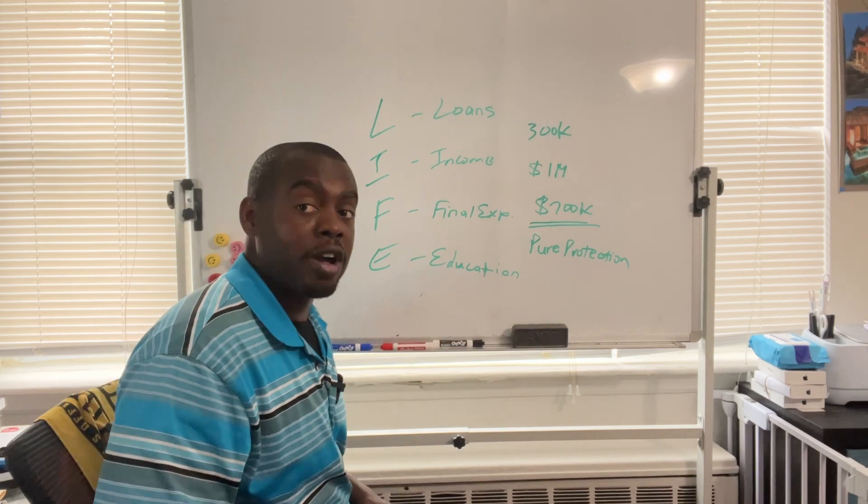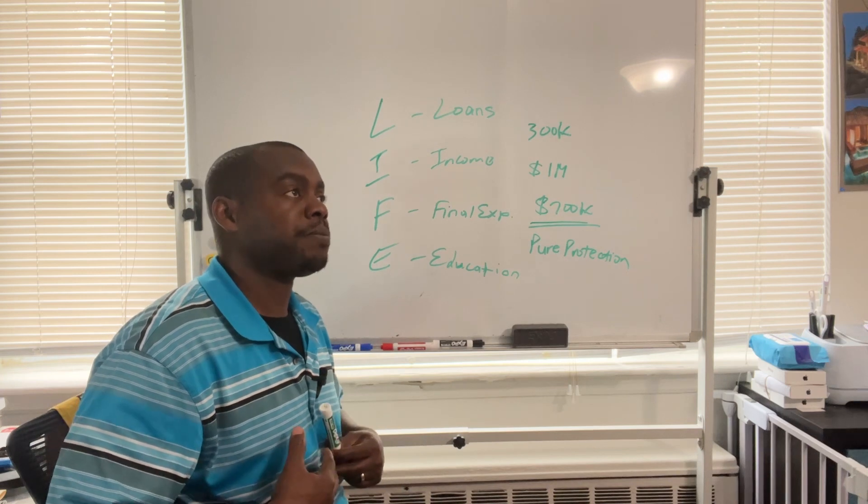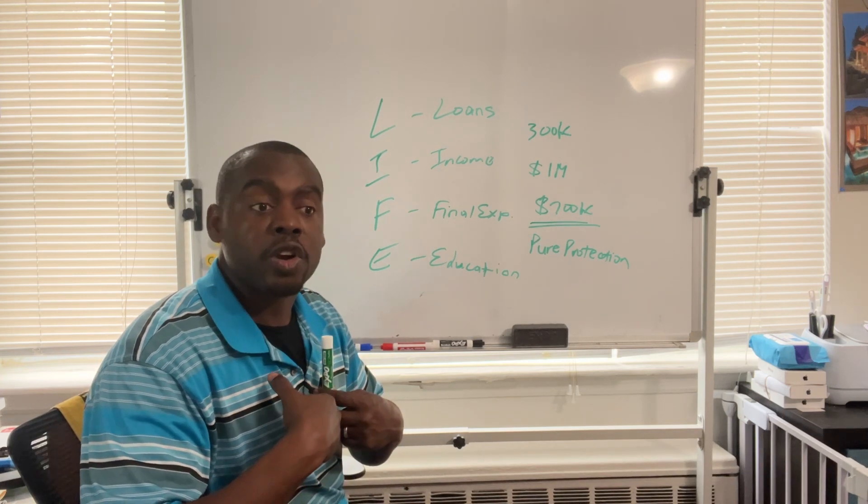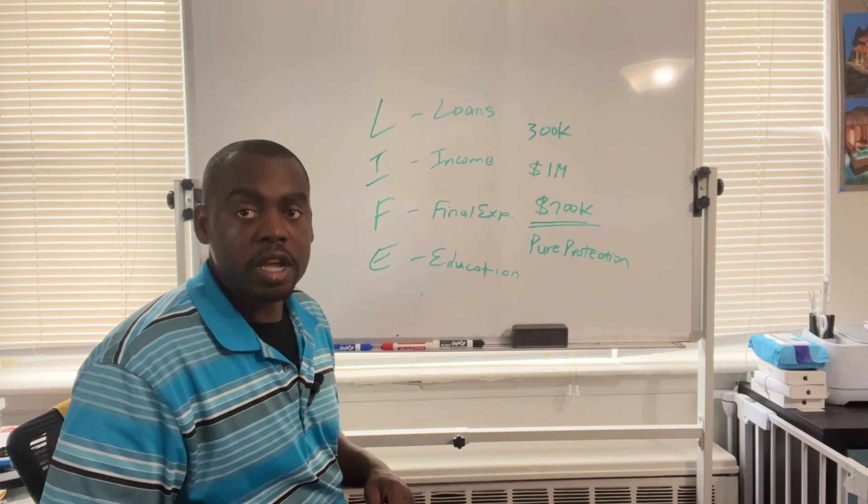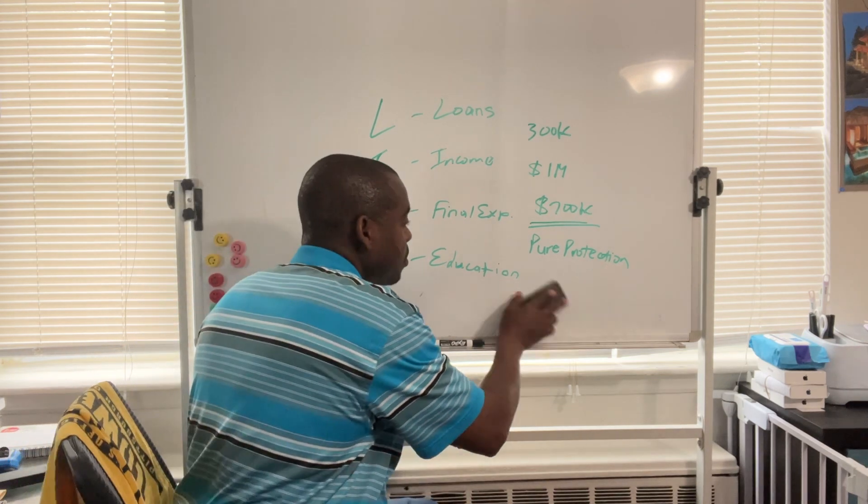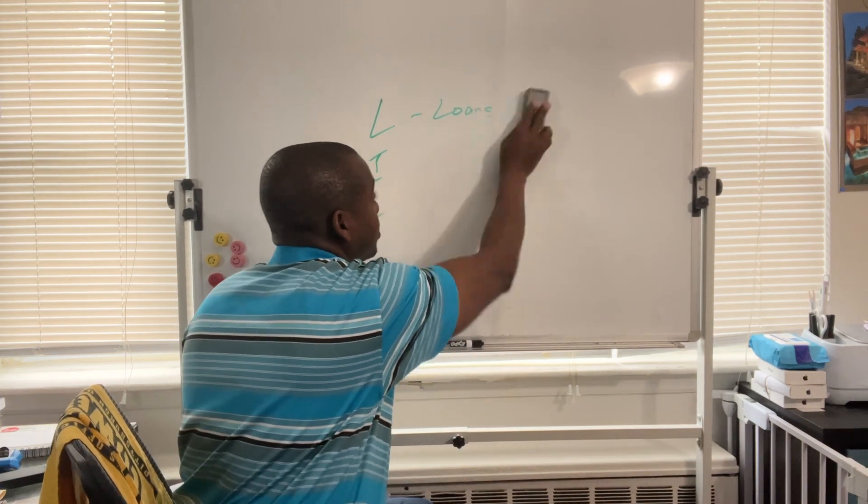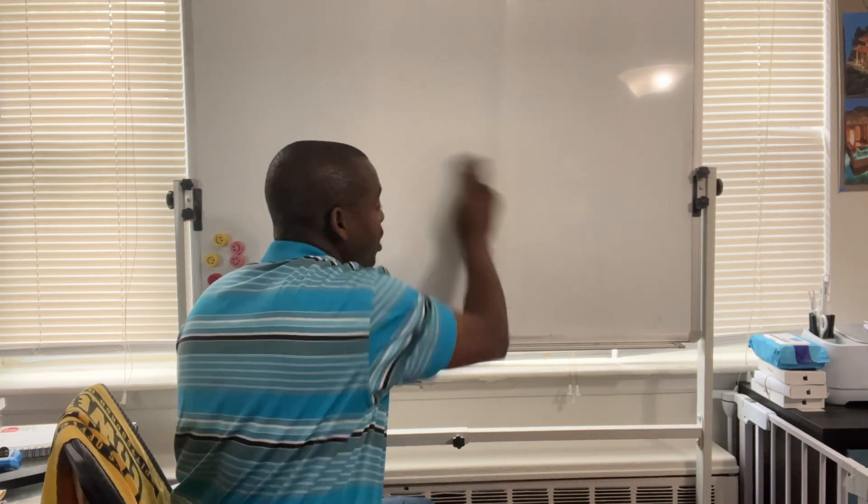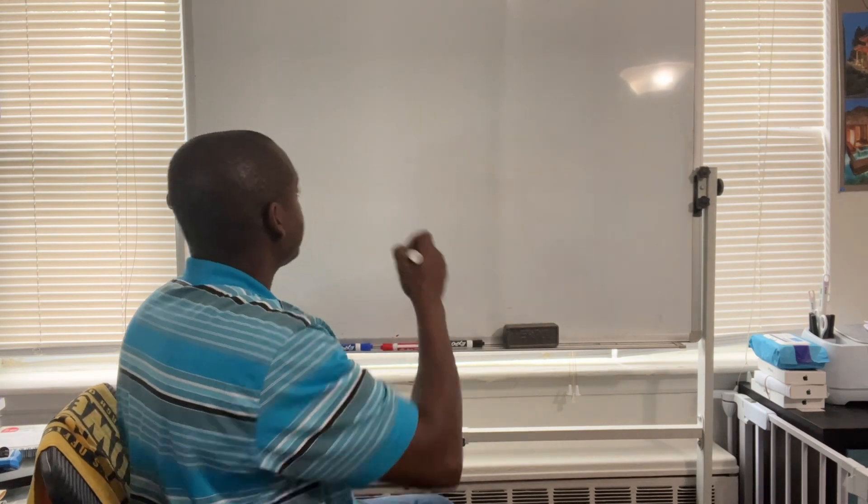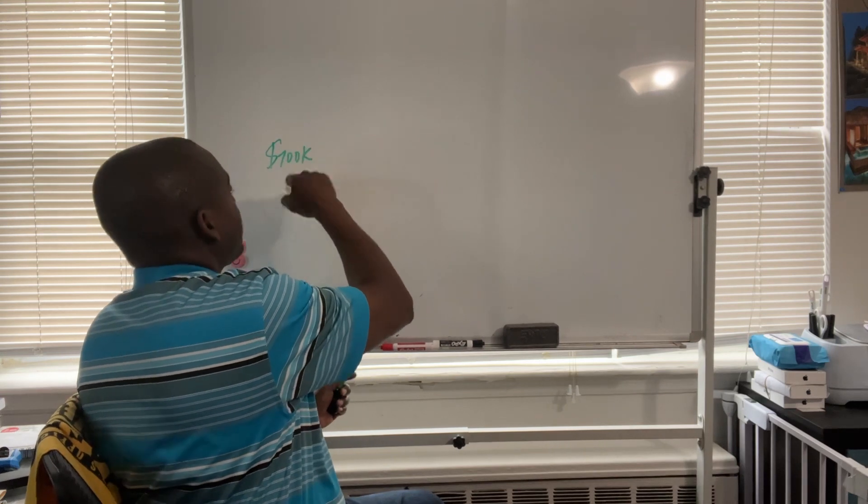So in terms of pure protection, a term could cover that. But what about permanent solutions? What about your long-term concerns? How do you account for that? By again adding up your numbers. What are your long-term concerns? What could they be?